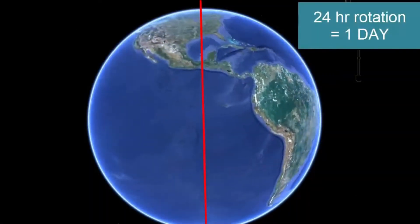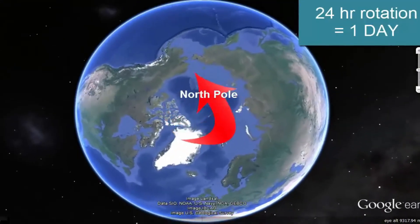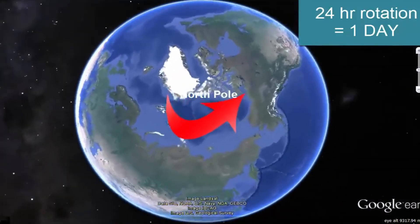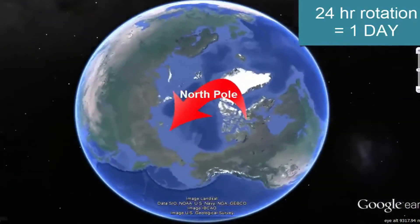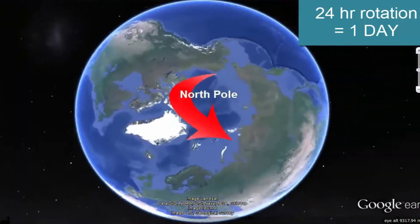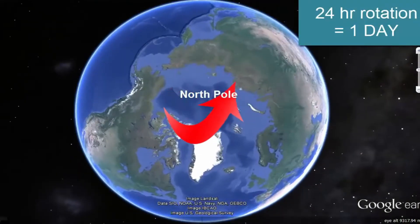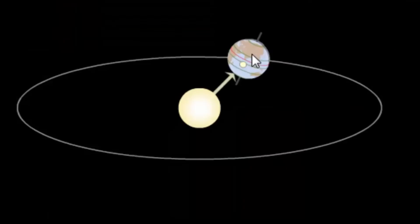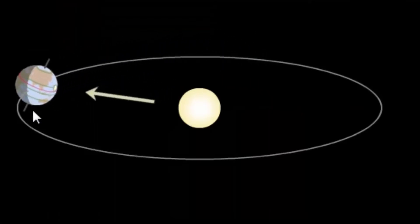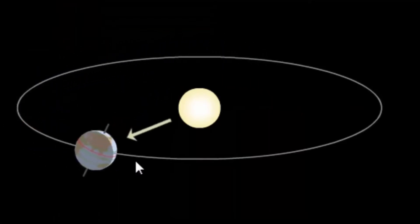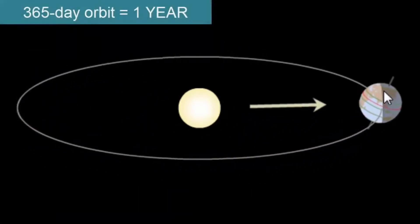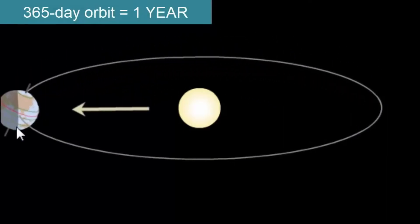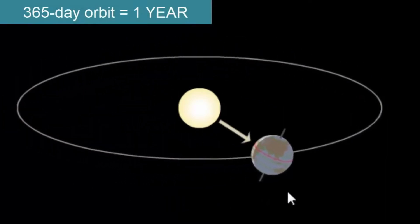Rotation takes 24 hours, that means one day. The Earth rotates in a clockwise direction. The Earth also moves around the Sun — that is called revolution. Revolution takes 365 days, that means one year. The journey around the Sun is called revolution.